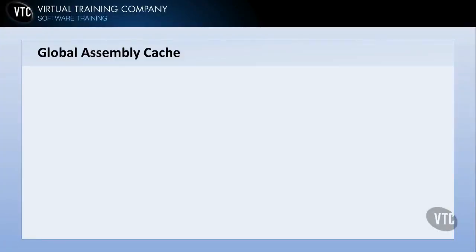Now let's take a look at the Global Assembly Cache. This is a unique and special place in the .NET Framework, and this is going to be a two-part video. In part one, I want to talk about the Global Assembly Cache, what it does for us, the advantages it brings, and some things you need to have fresh on your mind when you go take the exam. Then in part two, we're going to actually add an assembly to the Global Assembly Cache.